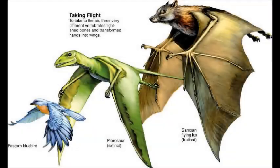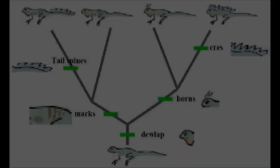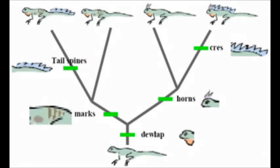One of the fundamental principles for the evidence of common ancestry is homology. There are two different types of homology: morphological and molecular. When two or more species share morphological features that are governed by common underlying principles, they are considered homologous.